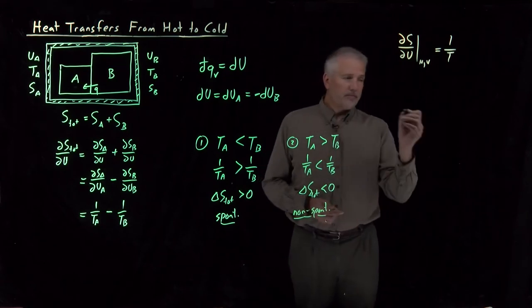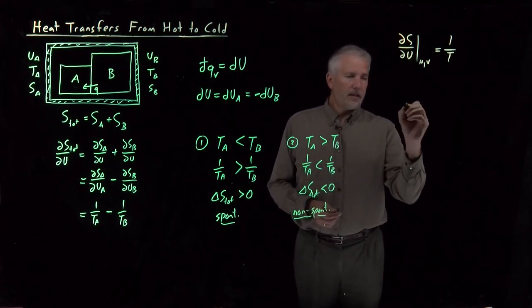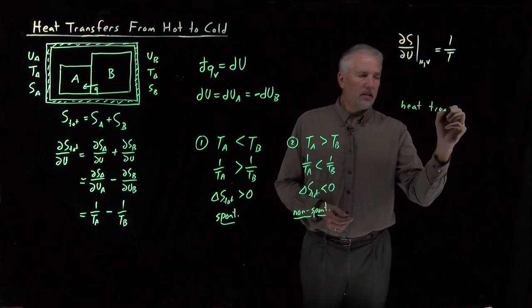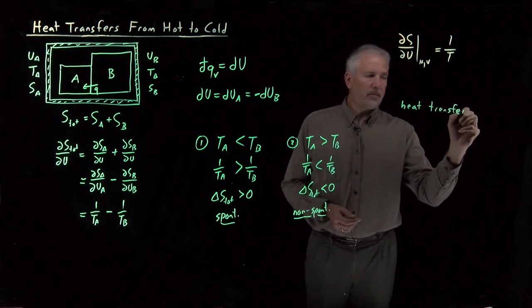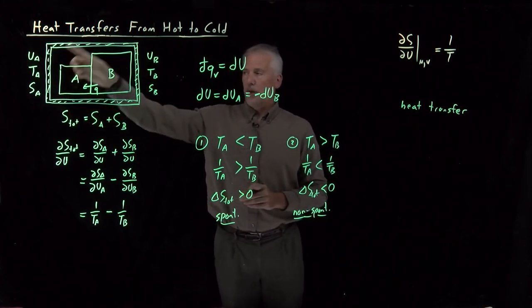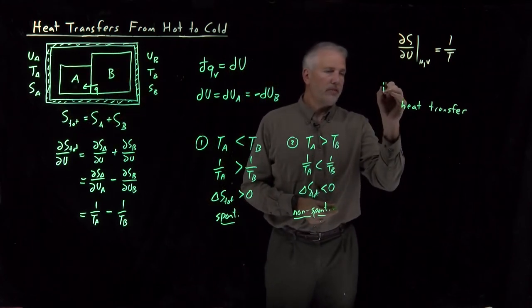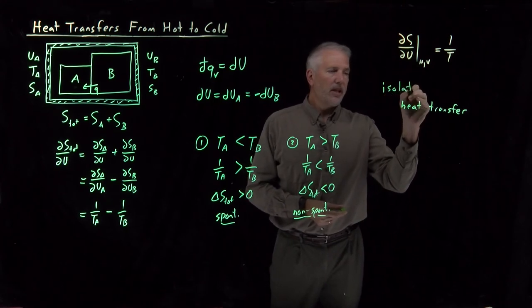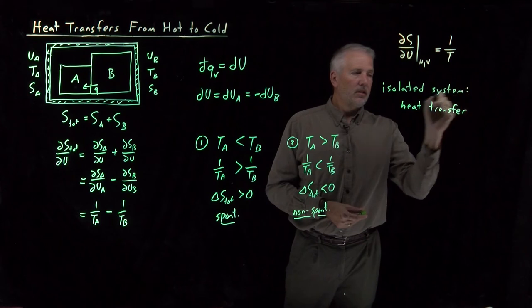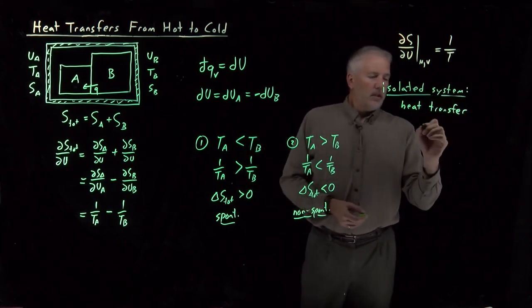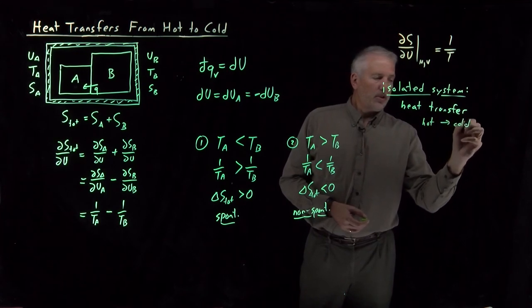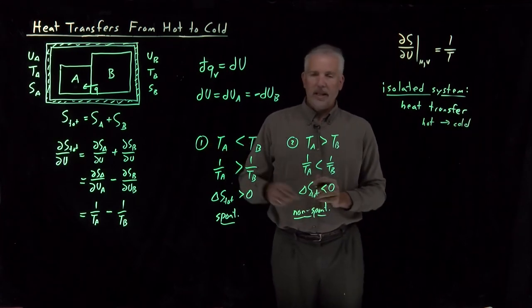So summarizing what we've found, for this specific example, in particular, where we've been able to assume the energy is constant, we have an isolated system. So for the specific case of an isolated system that cannot transfer energy with its surroundings. If we have heat transfer from the hot part of the system to the cold part of the system, as we had in case 1, that's a spontaneous process.